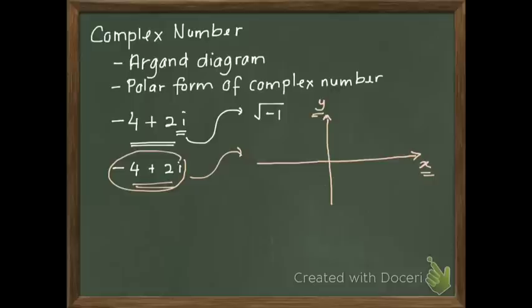How to represent this complex number into a graph? It's actually very simple. What you have to know is, this negative 4 is the x coordinate on the graph, and this 2 here is the y coordinate. So x negative 4 is somewhere here, y 2 is somewhere here, and you look at the meeting point. It's actually here. When you connect this coordinate to the origin, this is what we call an Argand diagram.